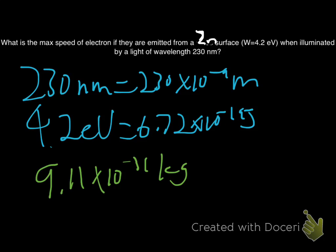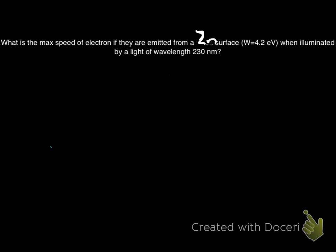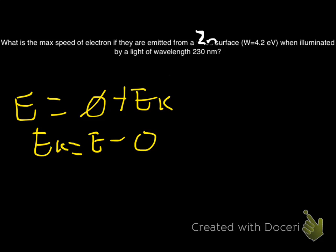Think of the electron as 9-1-1. So conservation of energy. Energy of the light is equal to the work function plus kinetic energy of the electron. Kinetic energy of the electron is equal to the energy of the light, subtract the work function.